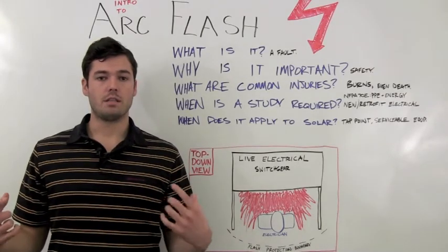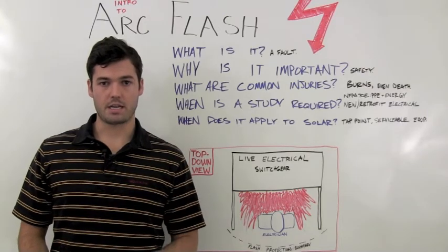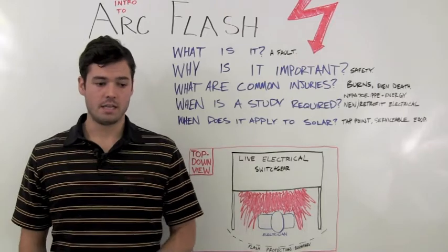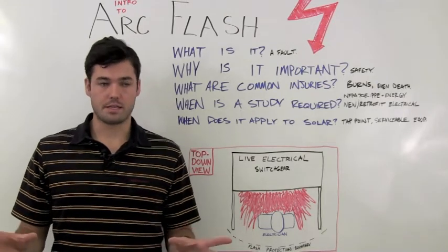The NEC requires labels to be placed on all potential serviceable equipment that can be worked on while under load that's in other than dwelling units. These labels need to state that there's a potential warning or Arc Flash hazard that is in that gear.